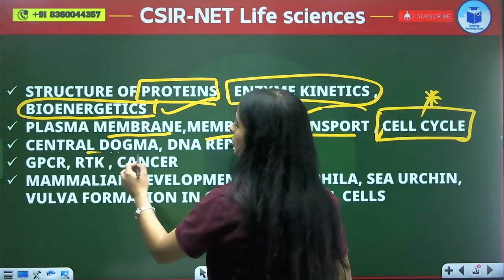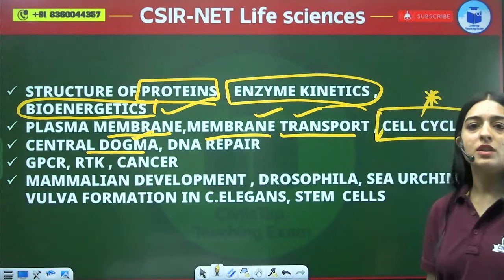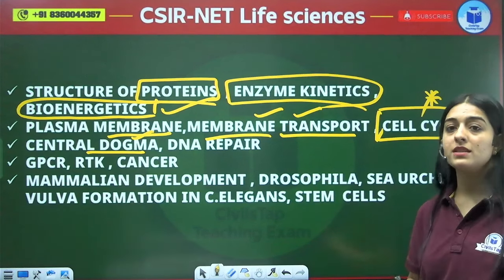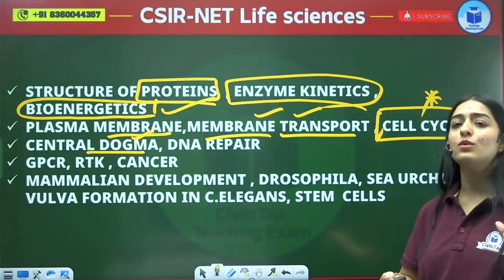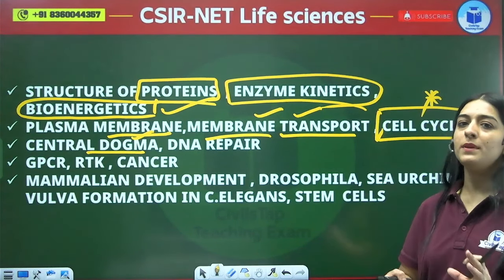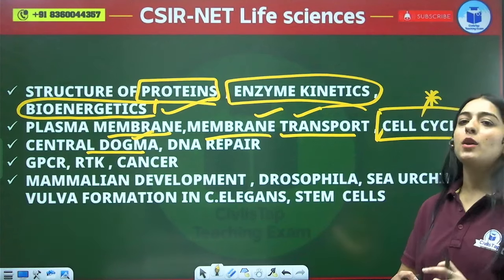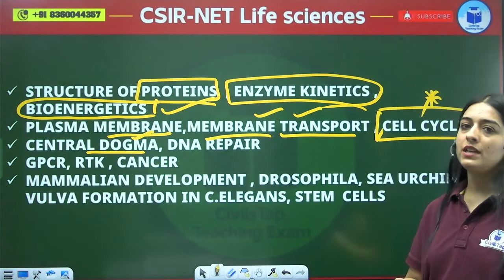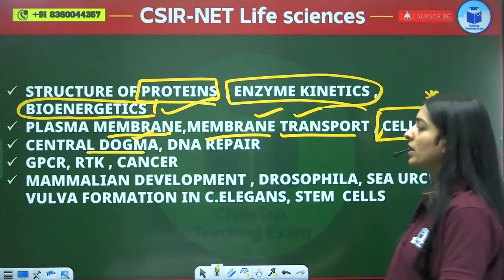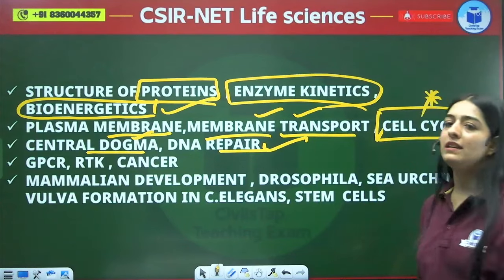Next is central dogma — replication, transcription, and translation. These are processes where there is certainty that a question will come. If you do these topics well, your score will be high. Also cover DNA repair mechanisms.